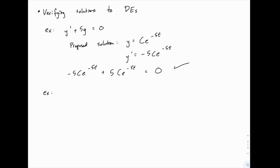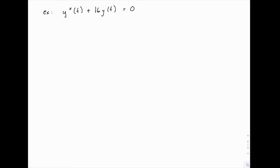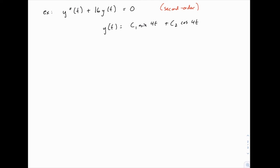Let's try another example. This is our first example of what's called a second order differential equation. That's because there's a second derivative. We have the second derivative of y plus 16 times y equals zero, and our proposed solution is c1 sine of 4t plus c2 cosine of 4t. Notice there are two arbitrary constants, c1 and c2.